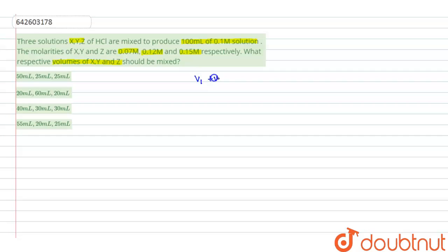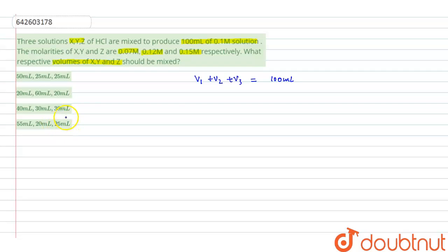According to the question, the final volume of the solution is 100 mL, meaning V1 + V2 + V3 = 100 mL. Checking all options: 50+25+25=100, 20+60+20=100, 40+30+30=100, and 55+20+25=100 — all satisfy this condition. So we cannot determine the answer just from this, and we need to apply the mixing molarity formula.